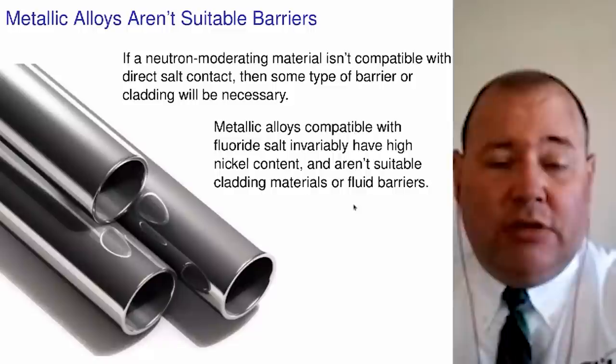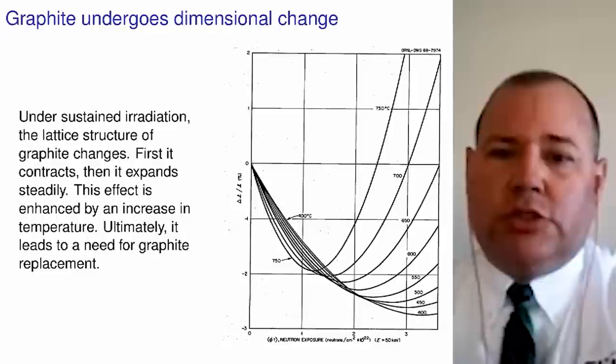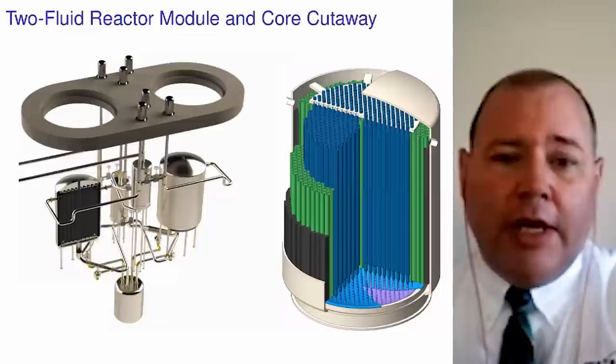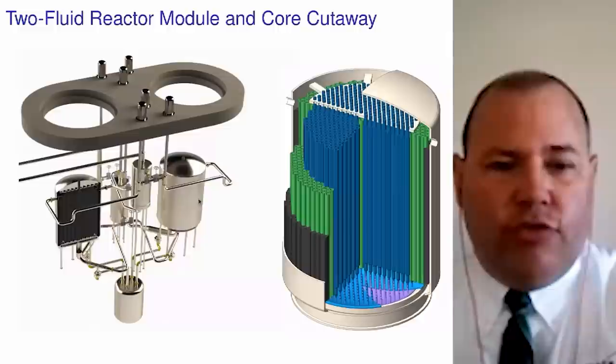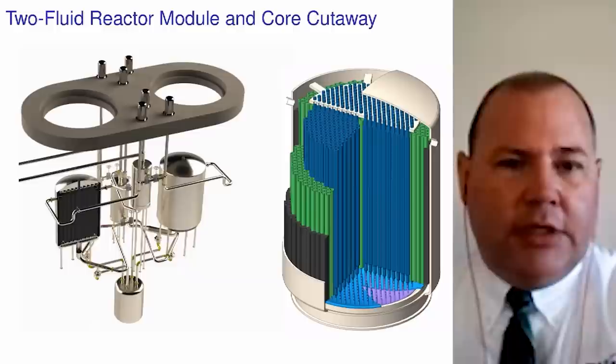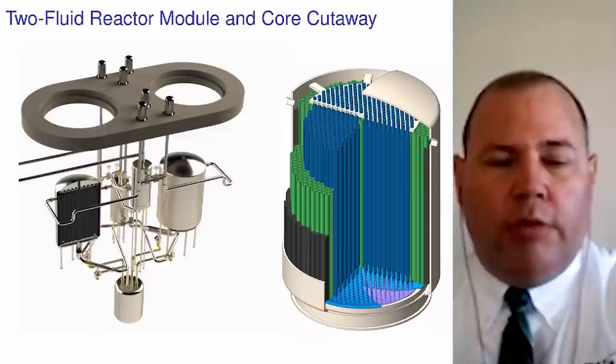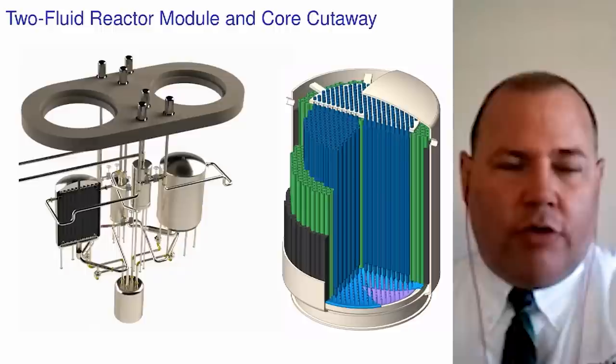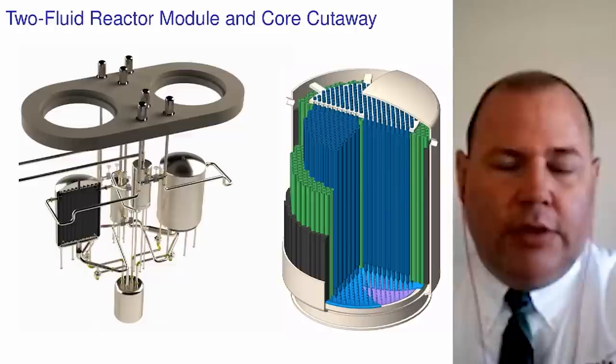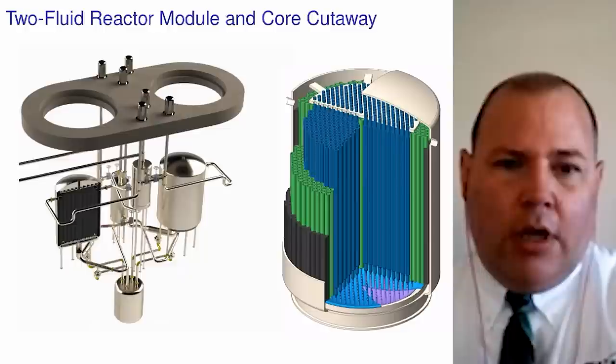Graphite is not perfect — it undergoes dimensional changes, which is a strong function of temperature. Nevertheless, we are advancing a configuration where we would have two reactor vessels, only one of which would be active at any given time. As the first reactor finishes a number of years of operation, we pump the fuel over to the second reactor and continue operation while the first reactor core cools down and eventually has its graphite reshuffled and replaced. In this manner we believe we can work around the graphite issue.